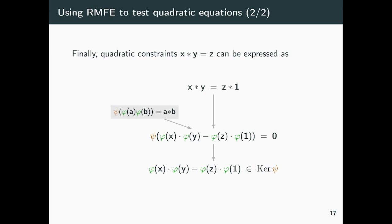This is essential because now, if we have the encoding of x, y, z and the vector of all ones, applying the map ψ, we can essentially recover the same equation over the larger field. This can also be reformulated by saying that the product of the encoding of x and y minus the product of the encoding of z and the all-ones vector lies in the kernel of ψ.